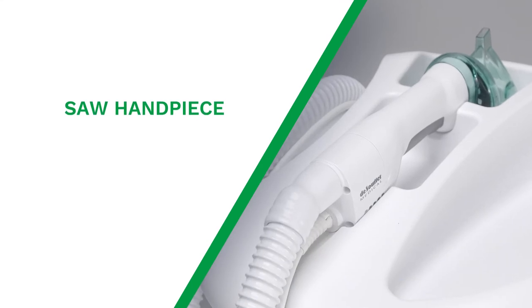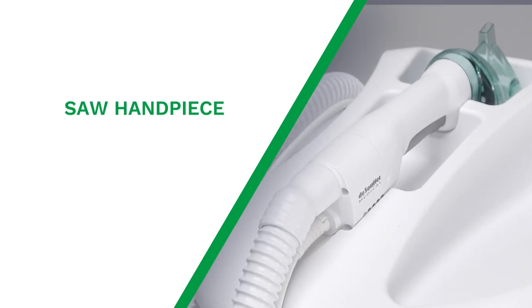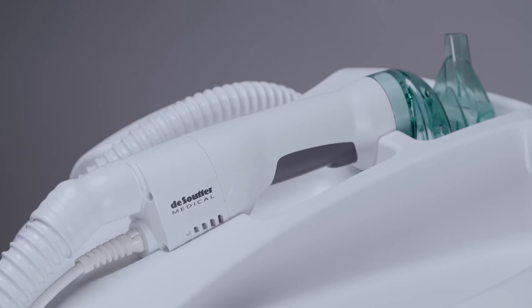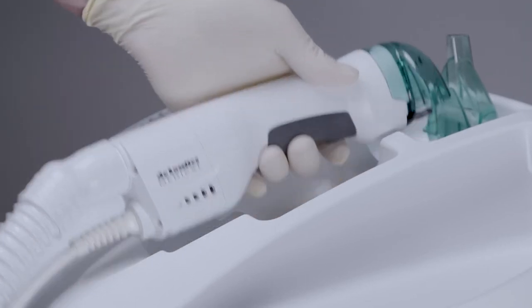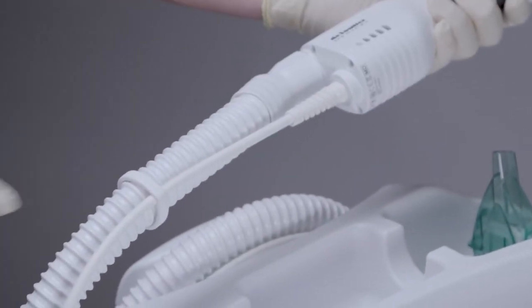I'm now going to talk you through the CC7 saw handpiece. Firstly, you'll notice that I've clipped the power cable to the extraction hose to keep things neat and tidy.